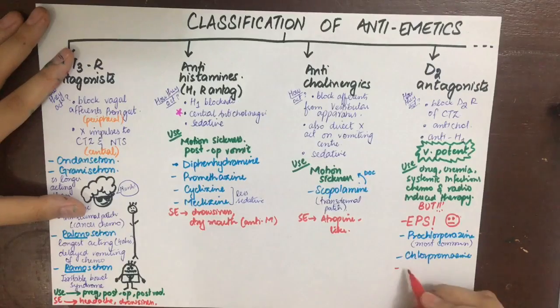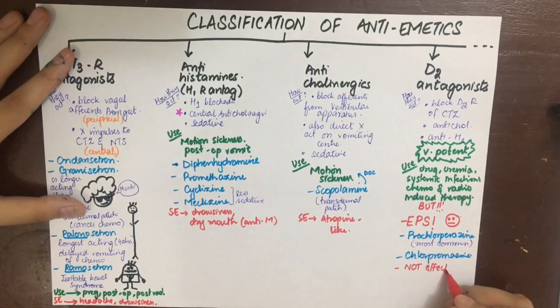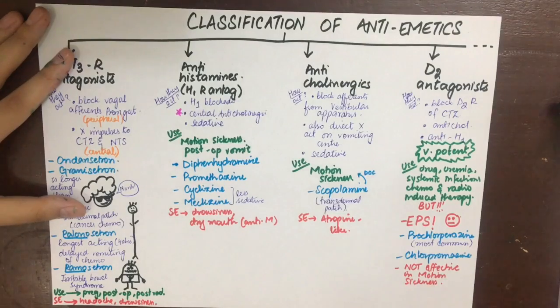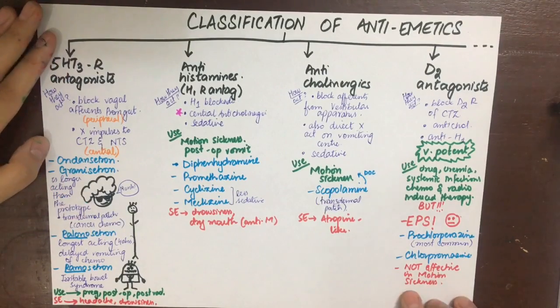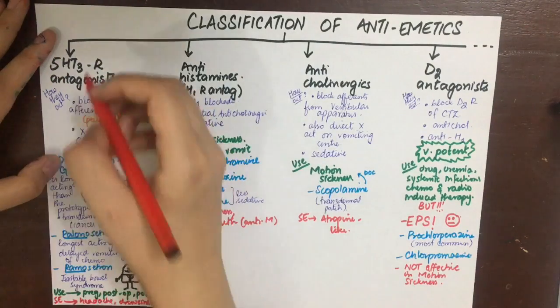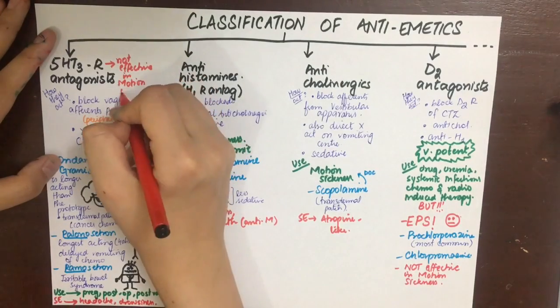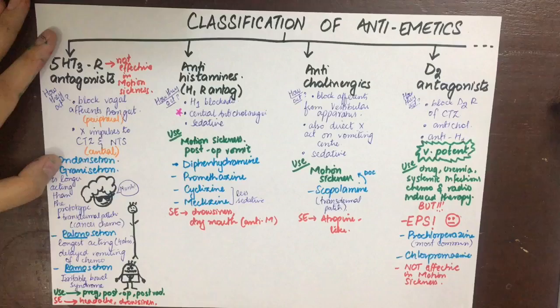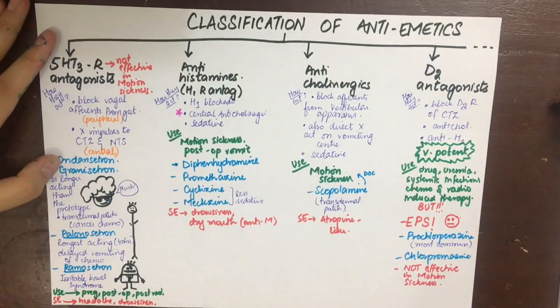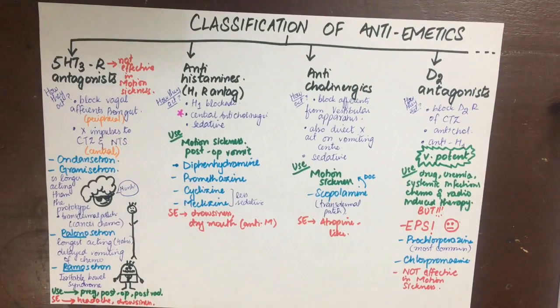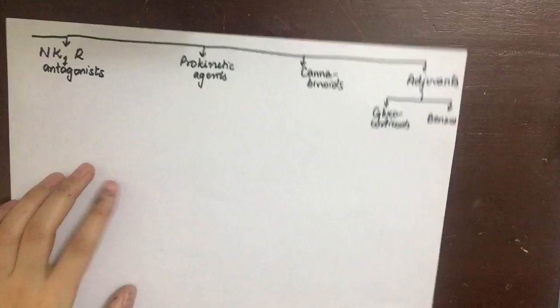Remember the extrapyramidal symptoms caused by D2 antagonists. They cannot be used to manage vomiting caused by anti-Parkinson drugs because anti-Parkinson drugs are D2 agonists and these are D2 antagonists, so we don't want to give an agonist and antagonist at the same time.